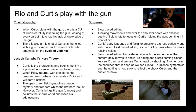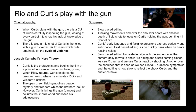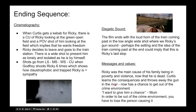Applying Joseph Campbell's Hero Theory: Curtis is the protagonist and begins the film at a point of innocence due to his young age. When Ricky returns, Curtis explores the unknown world — the crime environment — where he emulates Ricky and Wisdom's actions. The open green field can symbolise peace, mystery, and freedom, which the brothers look at. However, because Curtis is entering the crime environment, he brings this into the green field and loses his adolescence and innocence. In the ending scene when Curtis gets a kebab for Ricky, there is a close-up of Ricky looking at the open green field and a POV shot of him looking at the field, implying that he wants freedom and wants to get out of the crime environment — then Ricky decides to leave and goes to the train station.